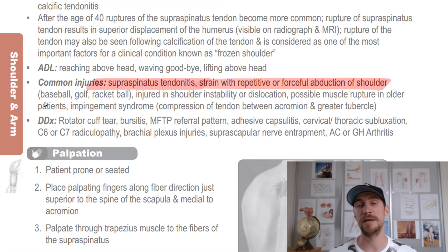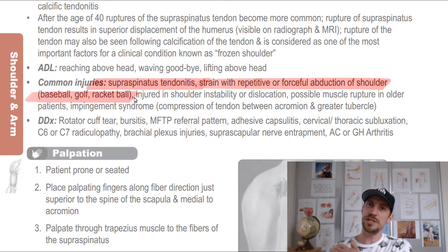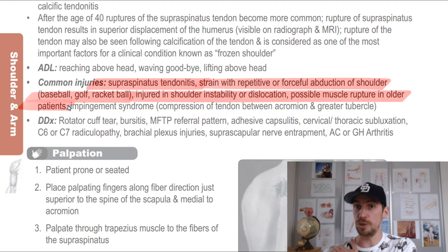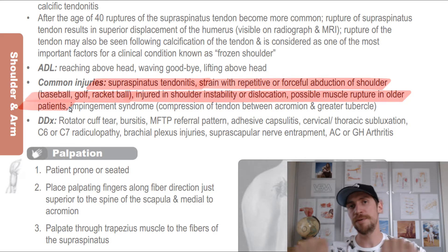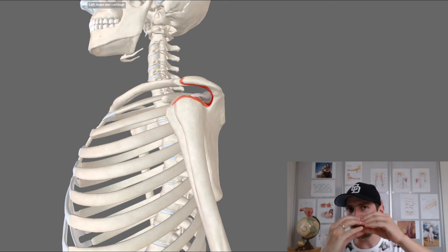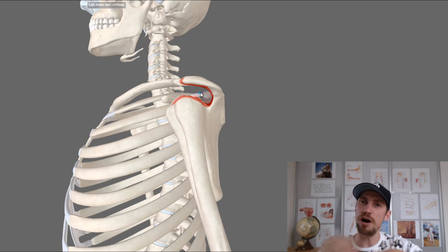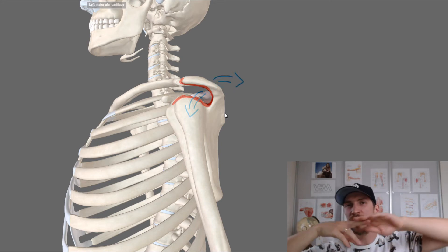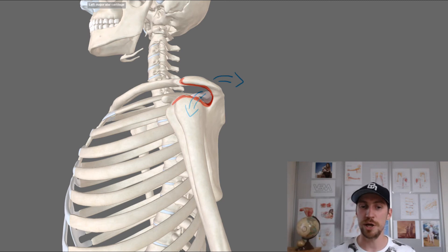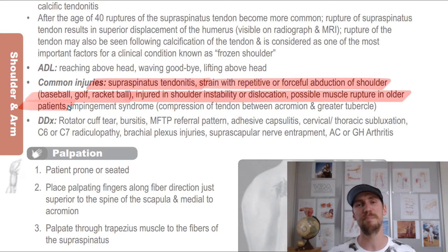Condition number two is strain with repetitive forceful abduction of the shoulder — mostly sports-related, such as baseball or golf, anything involving shoulder abduction. If we keep yanking on supraspinatus as it heals, muscle fibers will start to thicken. There will be ongoing scarring of muscle and tendon tissue, and the passage through the arch underneath the acromion becomes more and more problematic. So supraspinatus tendonitis and repetitive strain are definitely the top two conditions.